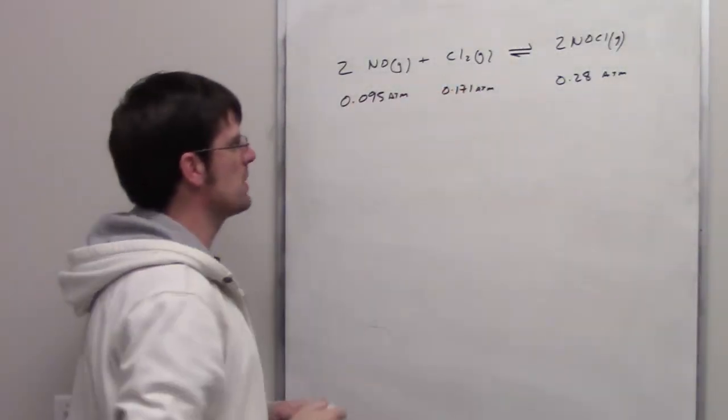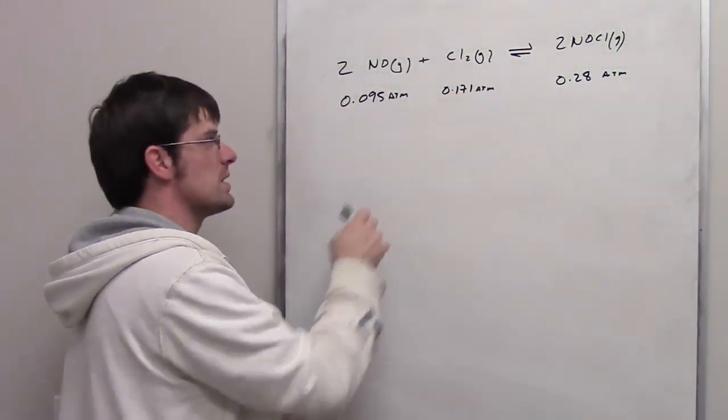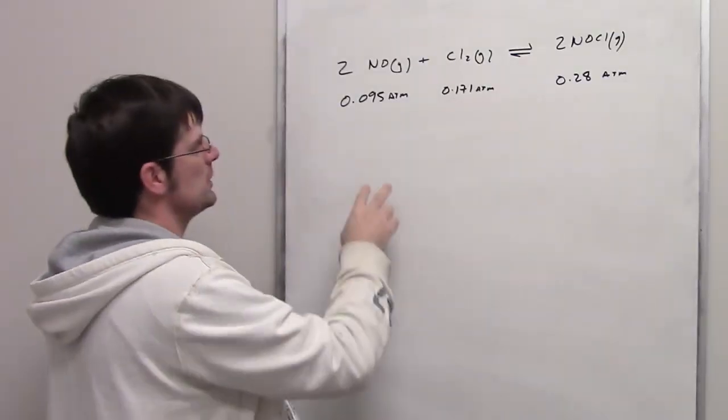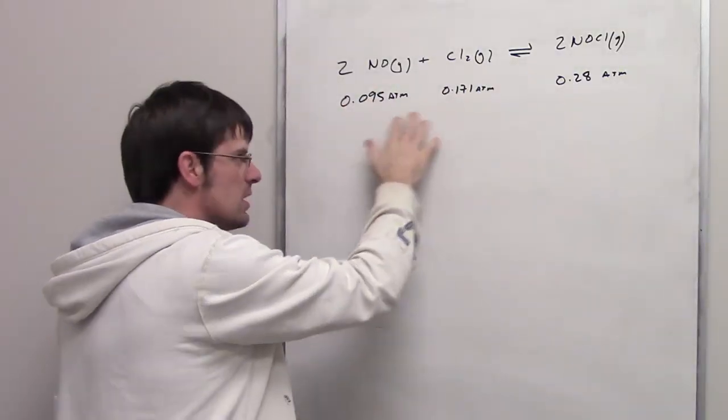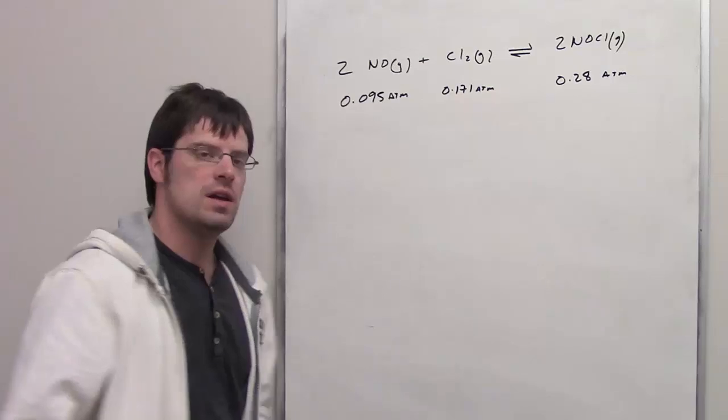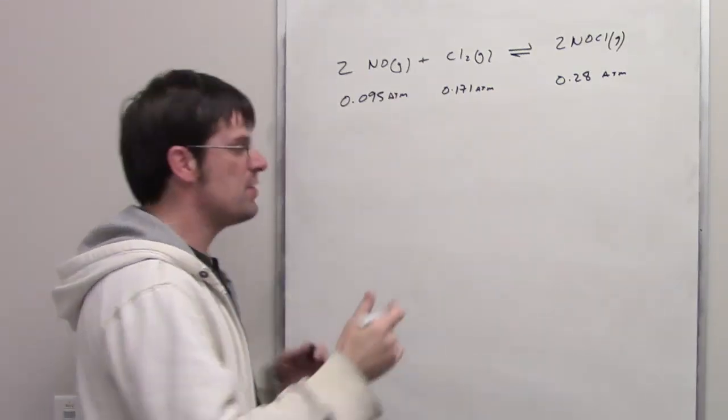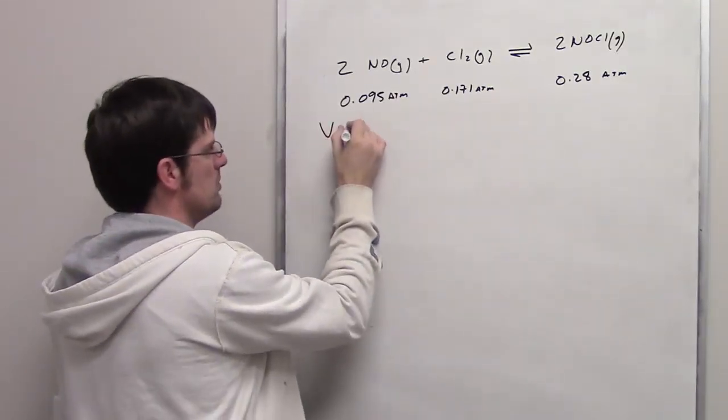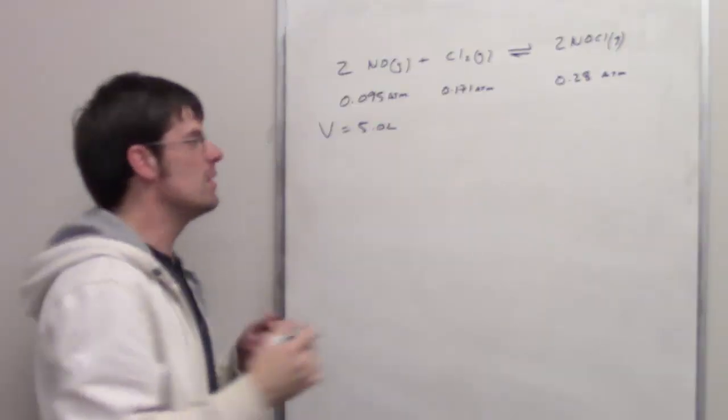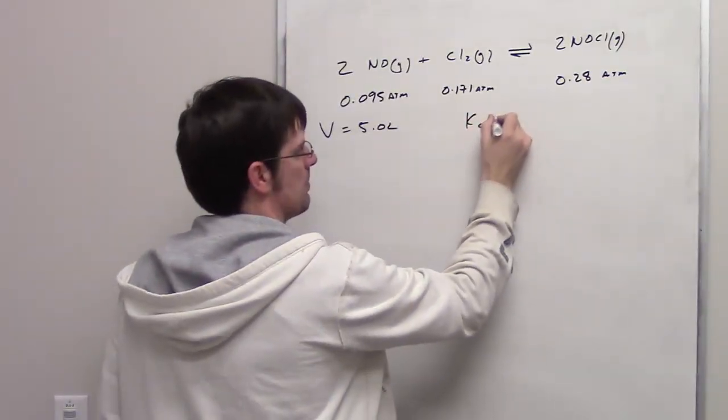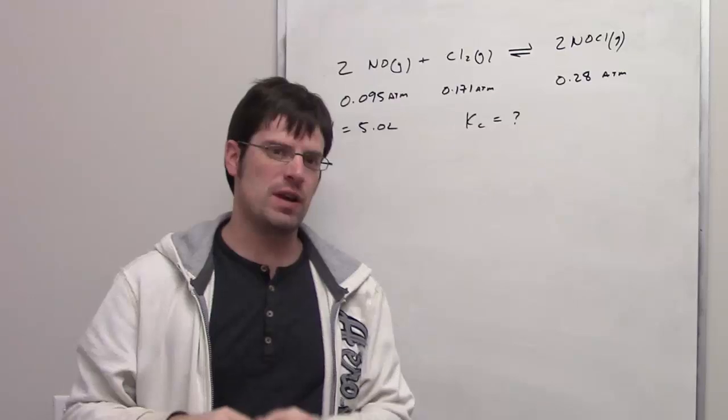This question gives us this equilibrium reaction. It also informs us that at equilibrium, the partial pressures of each of these substances are these numbers here. It then goes on to say that if this vessel has a volume of 5 liters, then what is Kc at this temperature? Let's see if we can figure that out.